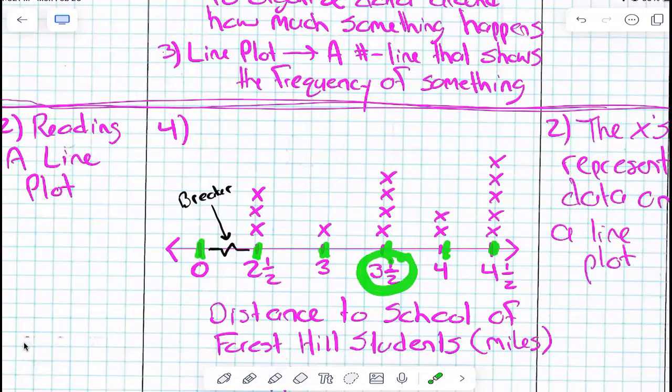Miles of what? So like how far kids live from Forest Hills, right? So we have three and a half miles. How many kids live three and a half miles from Forest Hills? How do you know that? There's four data points plotted there, right?